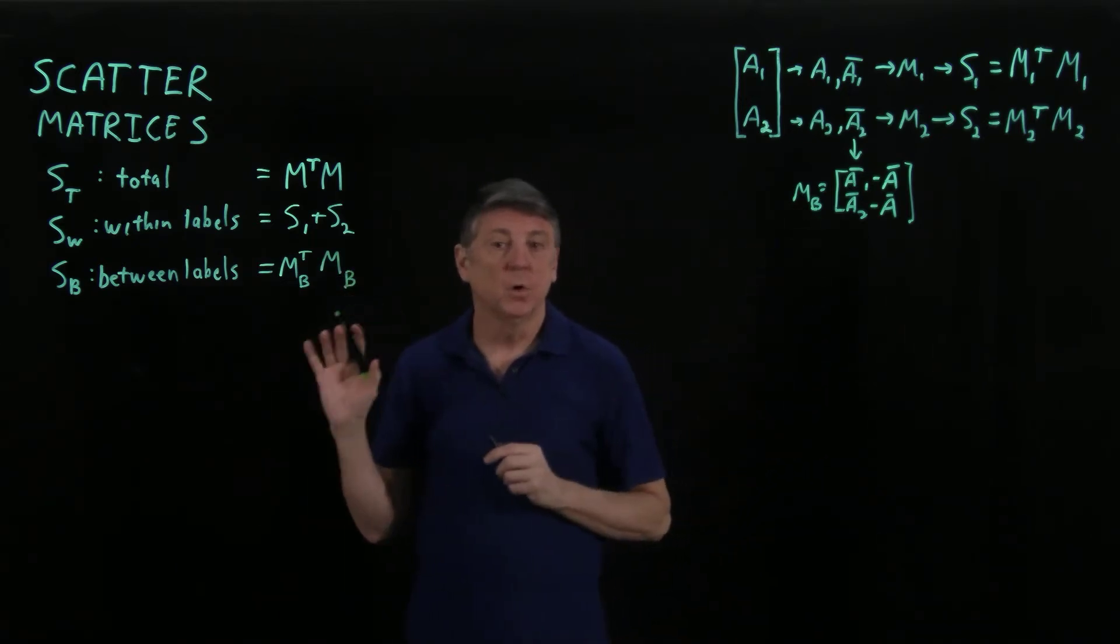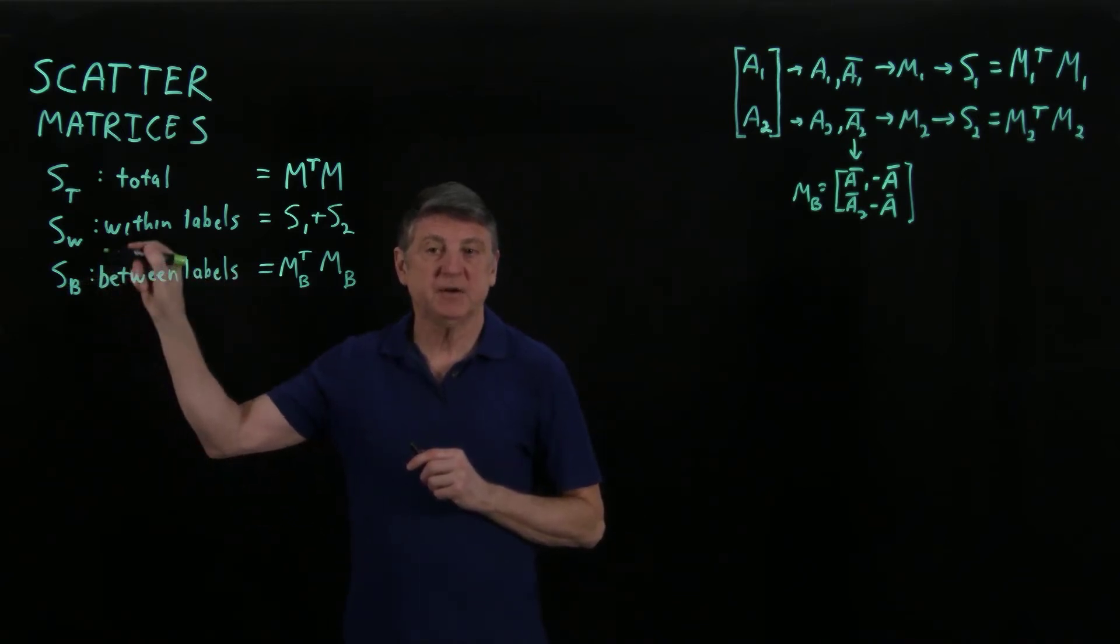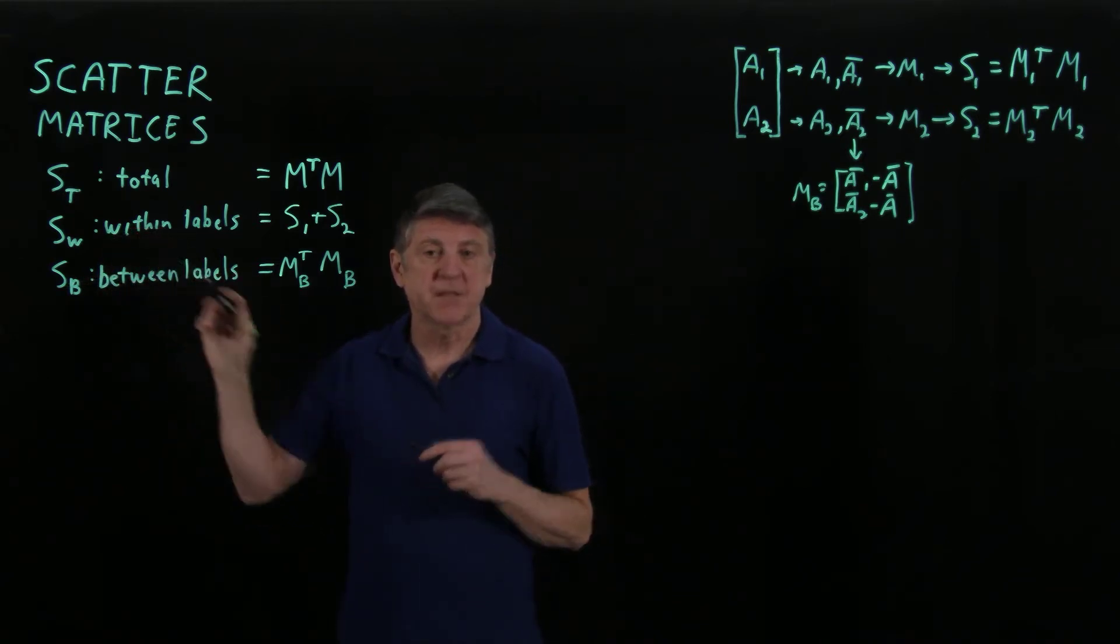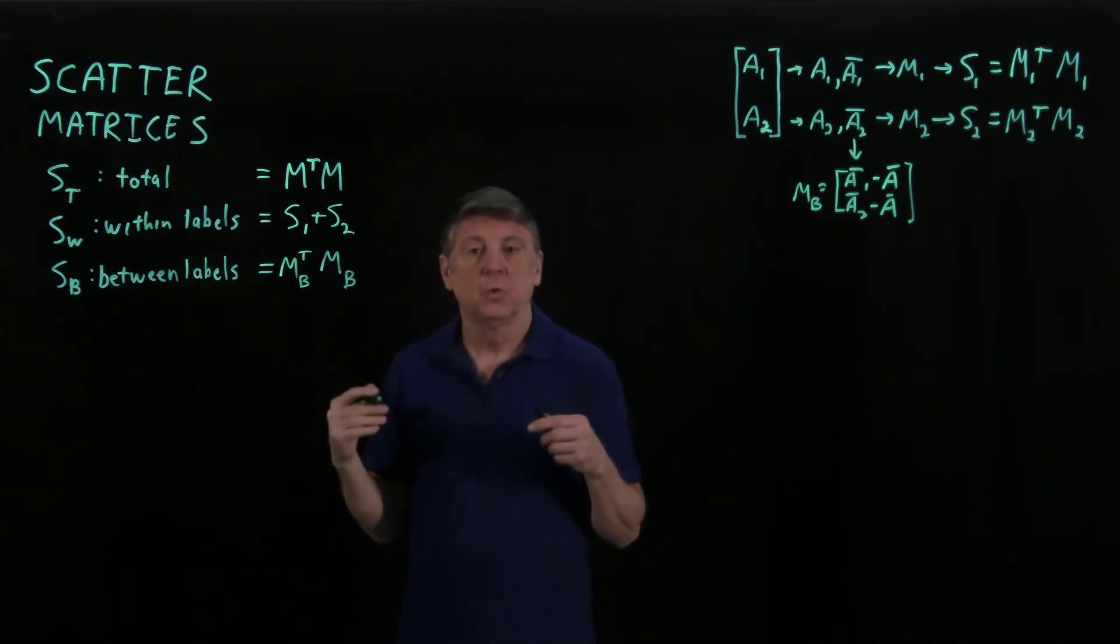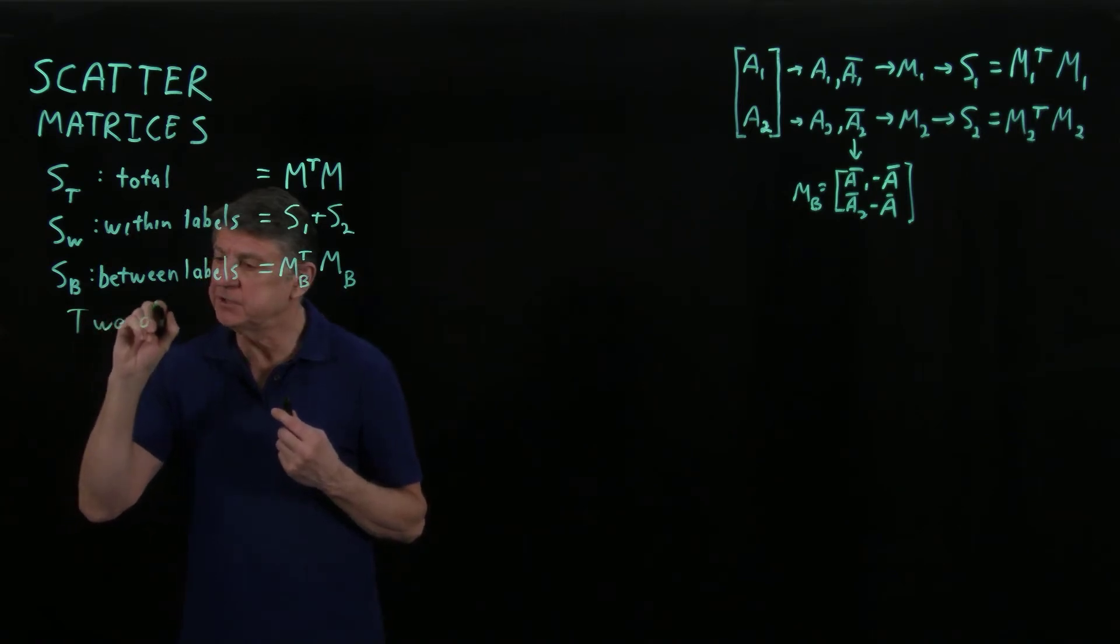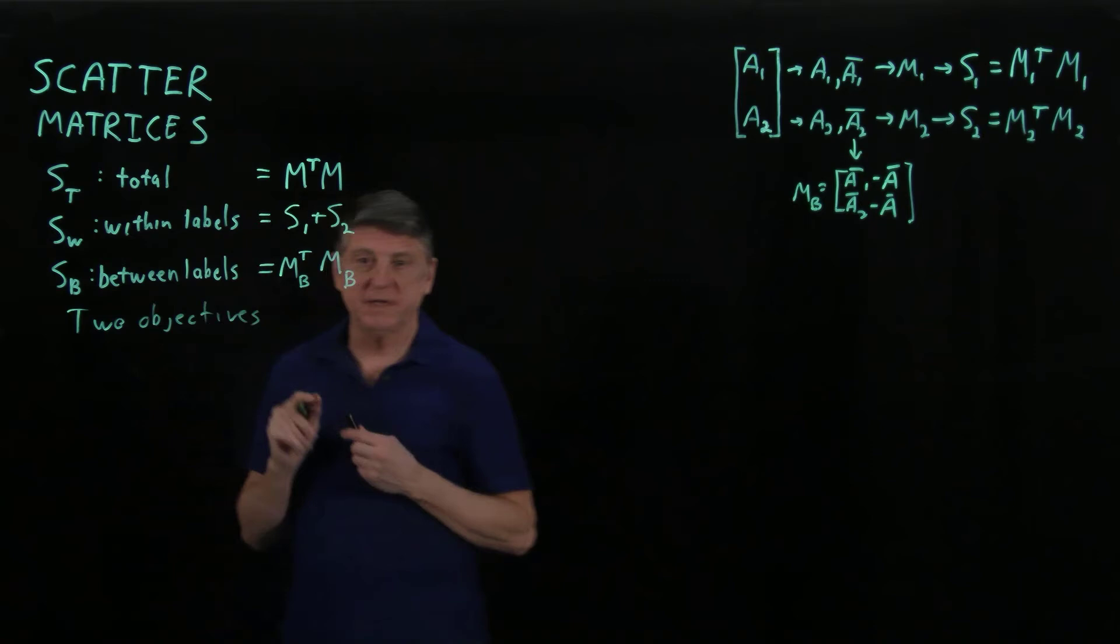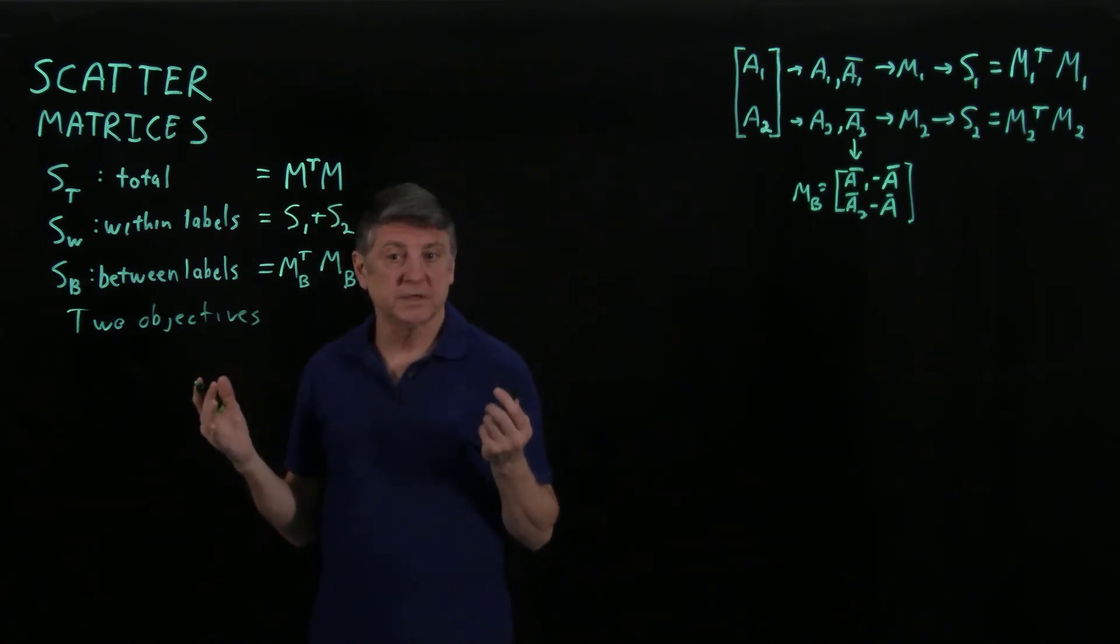So we can now formulate the between label scatter and the within label scatter. And what Fisher proposed was that we have two objectives. These are simultaneous objectives, and if we attempt to solve them independently, we won't get the same answer.